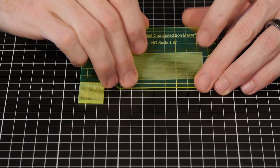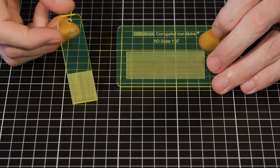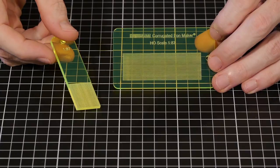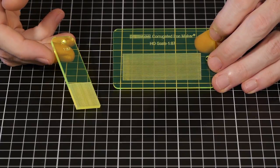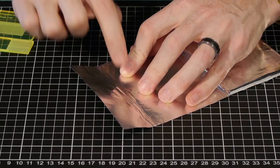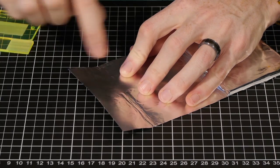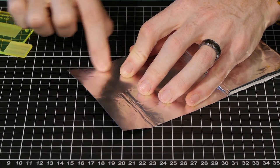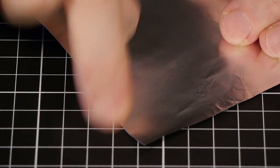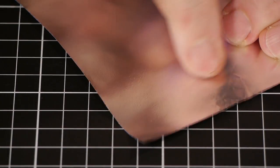First off you'll need a way to make corrugated iron. I'm using a corrugated iron maker from Brunel Hobbies. I'll put a link in the description below. The foil I'm using is heavy duty foil. Regular foil works however is much too fragile to handle. Even the heavy duty foil needs to be handled with extreme care.